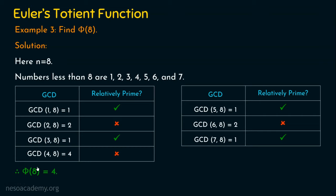I hope you now understood the concept of Euler's totient function, also called the phi function. The big problem is: if I ask you to compute phi of 1000, computing GCD of 1,1000 up to GCD of 999,1000 would take a very long time. There is a shortcut, and that is what we will see in the next lecture, where I will explain how to compute the phi function for bigger numbers using formulas.